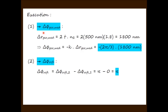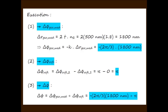Now that we have the phase difference due to the geometric path difference and the phase difference due to reflection, we take the sum of these two to find the overall phase difference. We note that for this problem there is no phase difference due to the sources, because the two rays emanate from a common source.